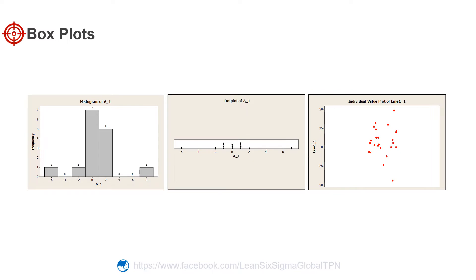The individual value plot and dot plot provide details about the individual data points, while the histogram groups data values together to better reveal the overall shape of the distribution.